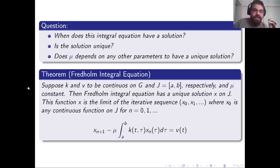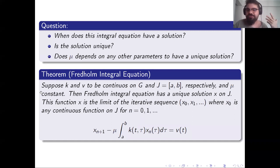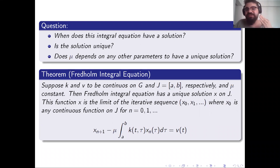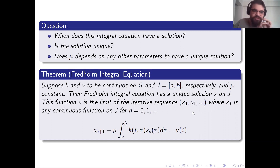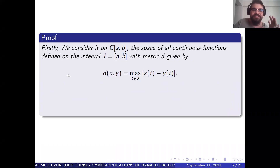There is an important theorem that answers all these questions using the Banach fixed point theorem. Let k and v be continuous functions on g and [a,b] respectively, and μ a constant. I will define a specific bound. Then the Fredholm integral equation has a unique solution x on J, and this x can be found by an iterative sequence as defined above.